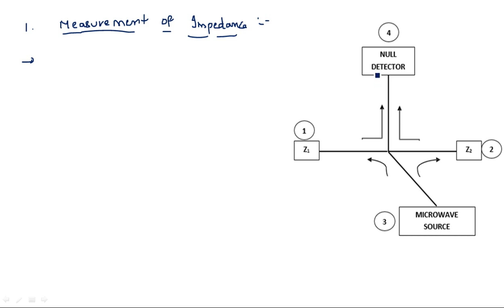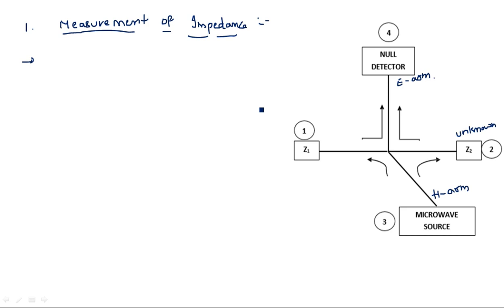In our application to measure the unknown impedance, the first arm is connected with a known or variable impedance Z1. The second arm is connected with the unknown impedance Z2. The third arm, which is the H arm, is given with a microwave source. The fourth arm, which is the E arm, is connected with the null detector, which is used to terminate the reflections coming from any of these devices.